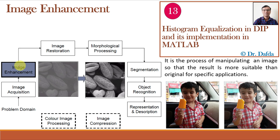The next step is image enhancement — to enhance means to improve the quality of the image. We all do this nowadays using our smartphones. Image enhancement can be done in the spatial domain or the frequency domain, and we have studied all the techniques in detail. One such technique is histogram equalization, which is used to enhance the contrast and brightness of an image by equalizing the intensity levels of the image pixels, making the histogram more uniform and spreading intensity values across the entire range.